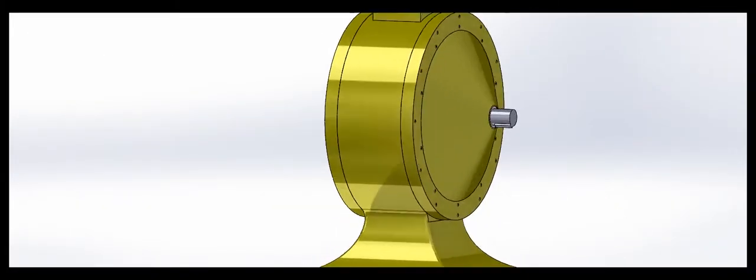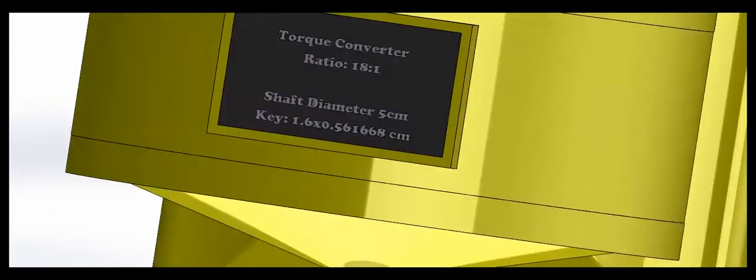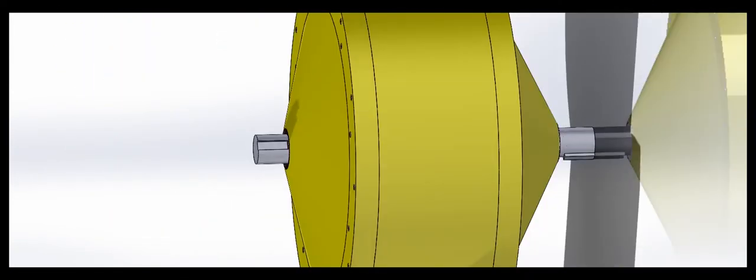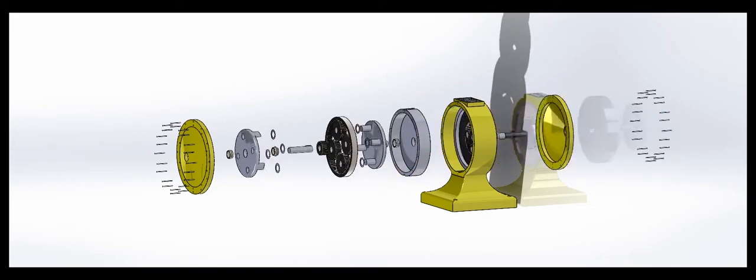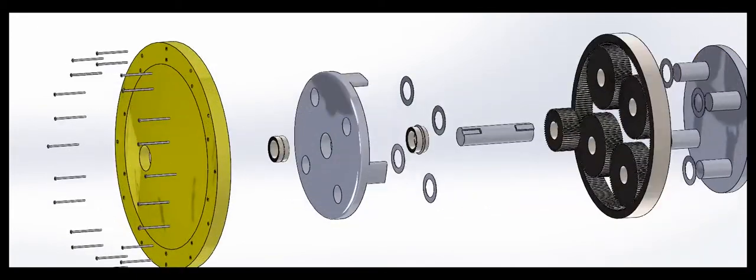This is the reducer. It takes the high speed of one end of the shafts and turns it into a slower speed with higher torque, so that the conveyors don't move as fast as the rotation of the motor.